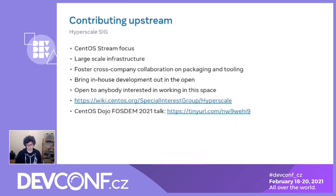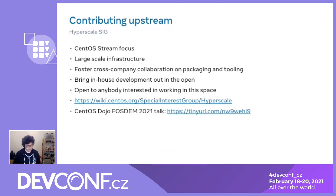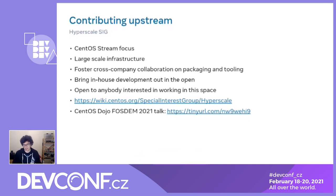We started the CentOS Hyperscale SIG in collaboration with other companies. The goal of the SIG is to make it easier for large companies like Facebook and Twitter — and really anybody else who wants to do development work in CentOS Stream — to have a place where they can build packages, including updates of base packages, get them deployed, leverage upstream tooling, and contribute as much as possible.